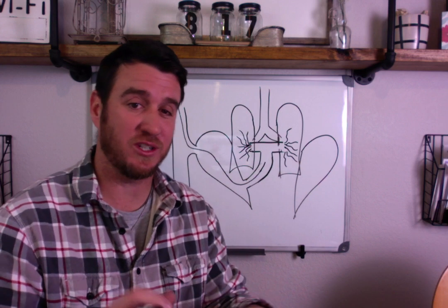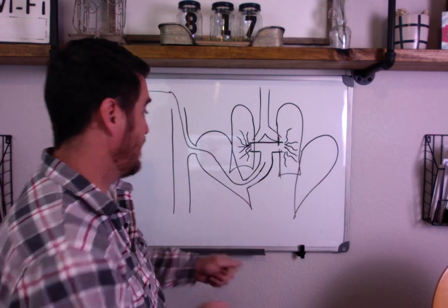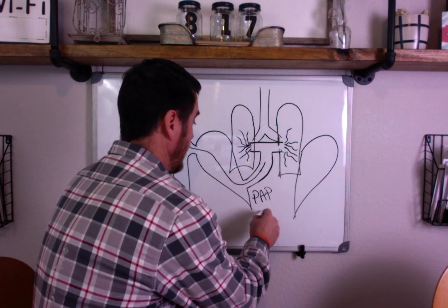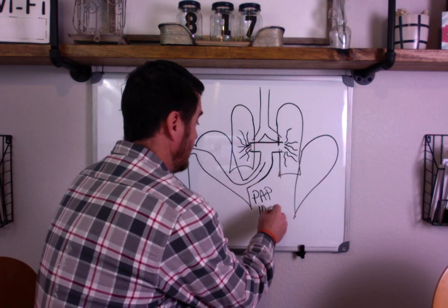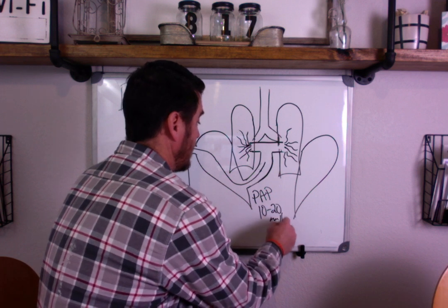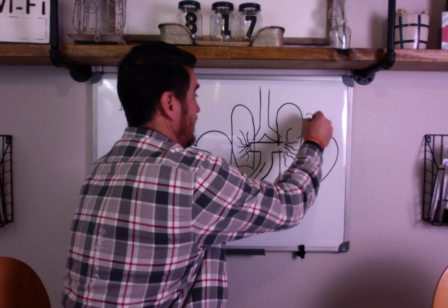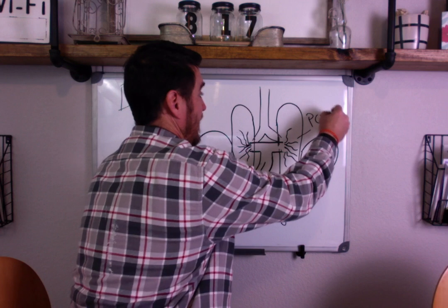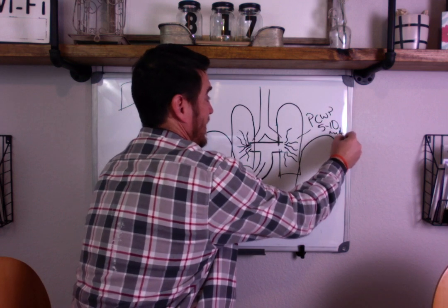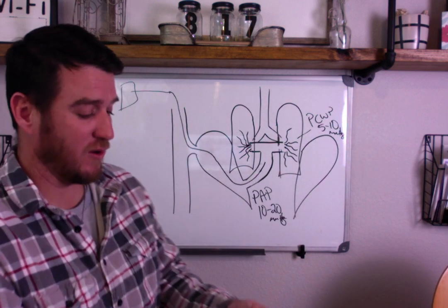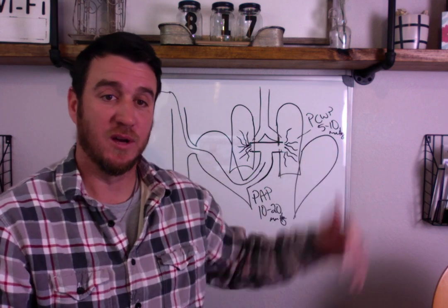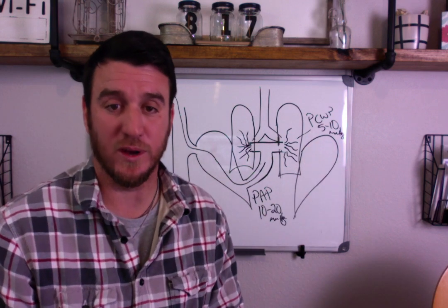When talking about mean pressures, your PAP — pulmonary artery pressure — mean arterial pressure is 20 millimeters of mercury. When talking about PCWP, you are talking about five to ten millimeters of mercury. Those are your normal values for pulmonary artery pressure and pulmonary capillary wedge pressure.